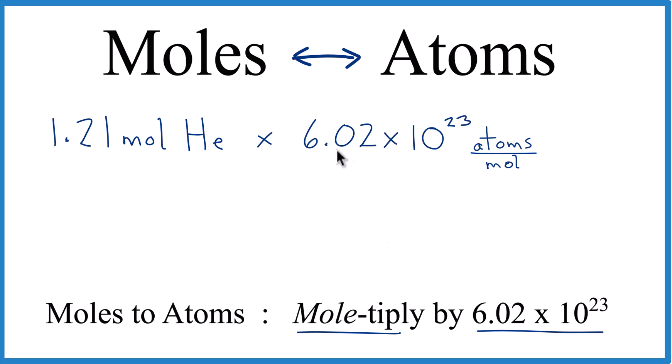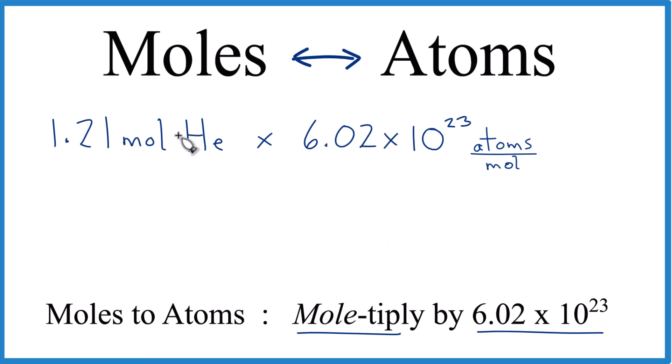So now we're going to multiply. Moles on top and the bottom, they cancel out. You're left with atoms. You know you did it right. So I take 1.2 times 6.02, I get 7.28. And then I can just put the times 10 to the 23rd on the end. And that's atoms. The only thing that's left.